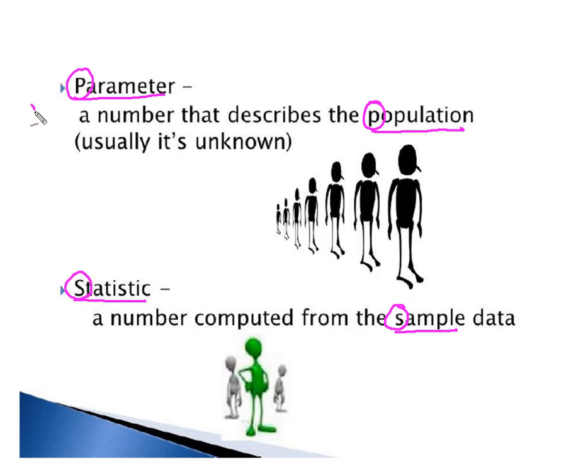But because I could calculate an average for my population and an average for my sample we need to be able to differentiate between the two and the way that we do that is through statistical notation.